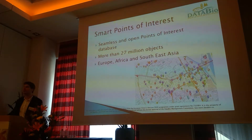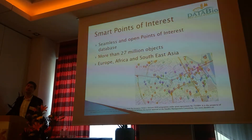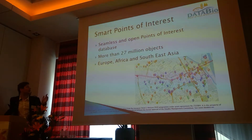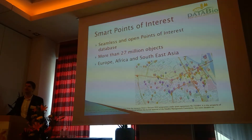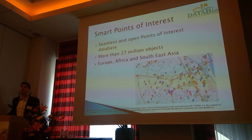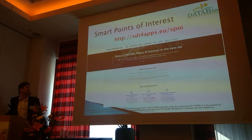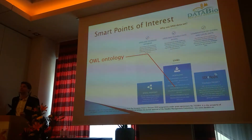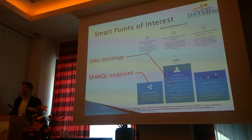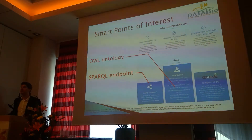The third database, before introducing the integration, is Smart Points of Interest. It covers Southeast Asia and Africa as well, because we found sources for that. For instance, in Africa, the most popular country is Cameroon, which has really detailed data comparable to Western Europe. Those 27 million objects are still being updated and available in several forms: the ontology itself and a SPARQL endpoint. Unlike the previous datasets, you cannot download it as a shapefile, but you can download it as linked open data.